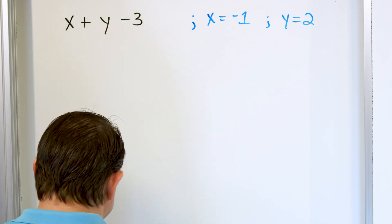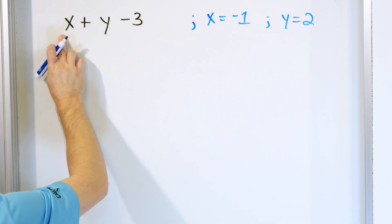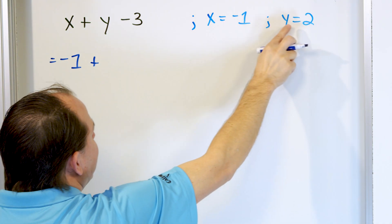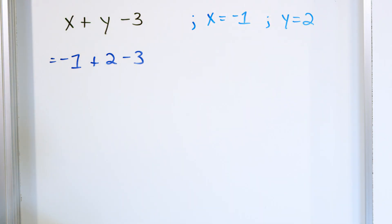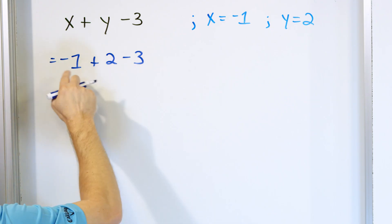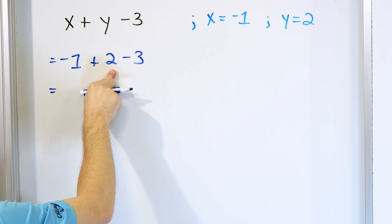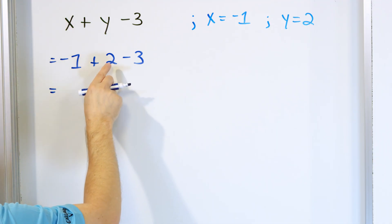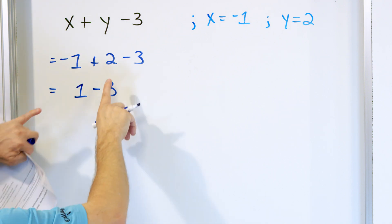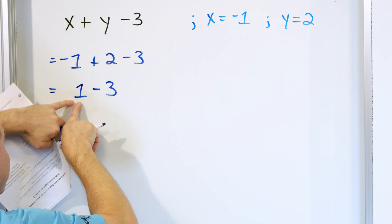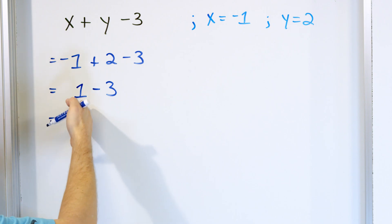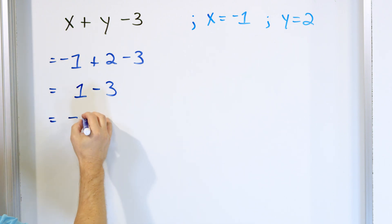So what do you do when you see this situation? You just take x and put it in the x position, and take y and put it in the y position. Put negative 1 for x and y is equal to 2. Now we have a simple expression to evaluate — the letters are gone, we've substituted in and now we have numbers. We only have addition and subtraction, so we go left to right. Negative 1 plus 2 — opposite signs — so you subtract: 2 minus 1 is 1, and the sign goes with the bigger absolute value, which is positive.